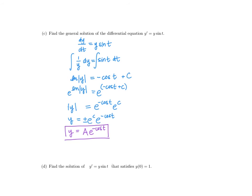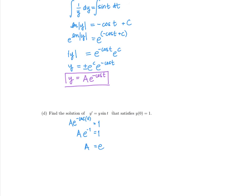For the particular solution, we use the initial condition y(0) = 1. Plugging in: A·e^(−cos 0) = A·e^(−1) = 1, so A = e. The particular solution is y = e·e^(−cos t), which can also be written as y = e^(1 − cos t). Either form is suitable as a final answer.